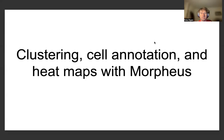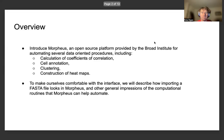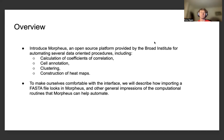The title of this presentation is Clustering Cell Annotation and Heatmaps with Morpheus. To begin with a presentation overview, we'll be introducing Morpheus, which is an open-source platform provided by developers at the Broad Institute for automating several data-oriented procedures, including calculation of different coefficients of correlation, cell annotation, clustering, and constructing heatmaps.